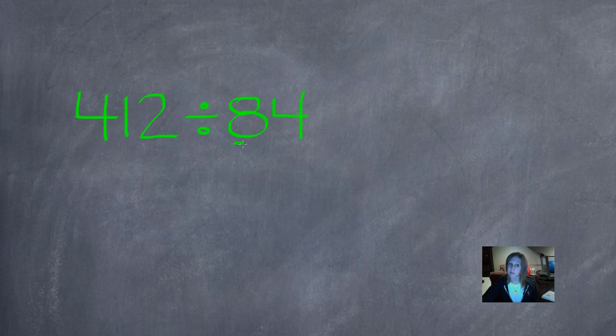So I'm going to round this to the greatest place value position. 84 rounded to the greatest place value position is 80. It's closer to 80 than 90.